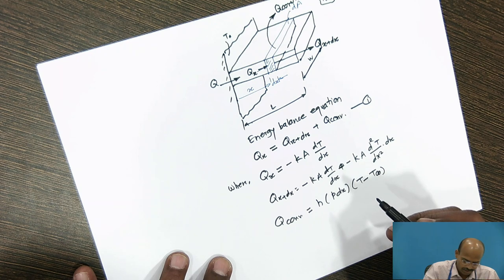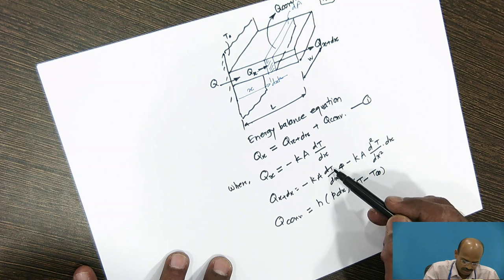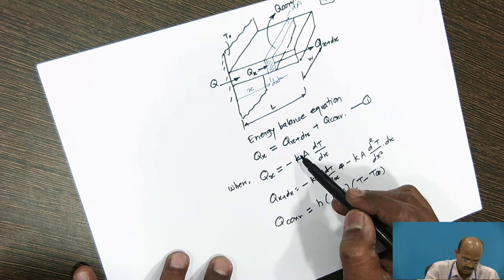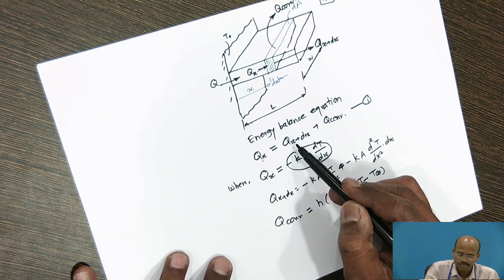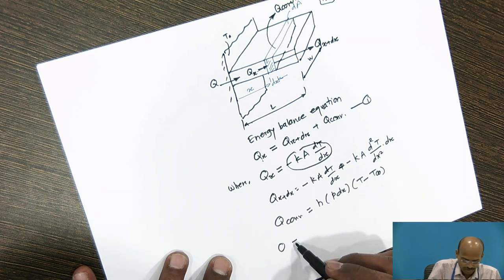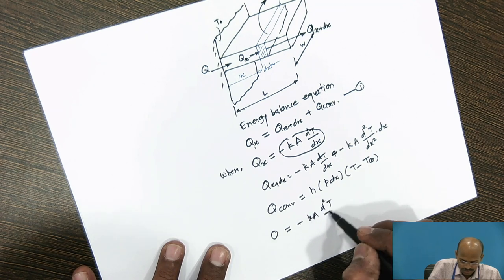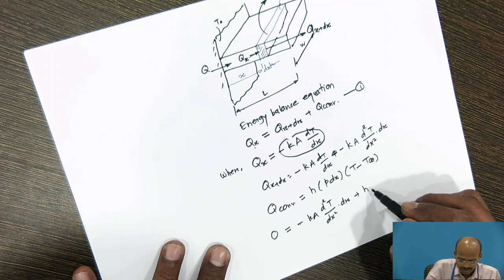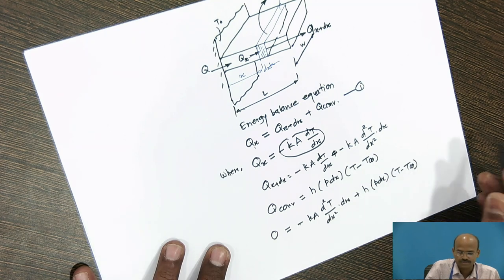Substituting these relations in equation number 1, this qx minus kA dT/dx term will get cancelled. What will remain? 0 will be equal to minus kA d²T/dx² dx plus hP dx (T - T∞).